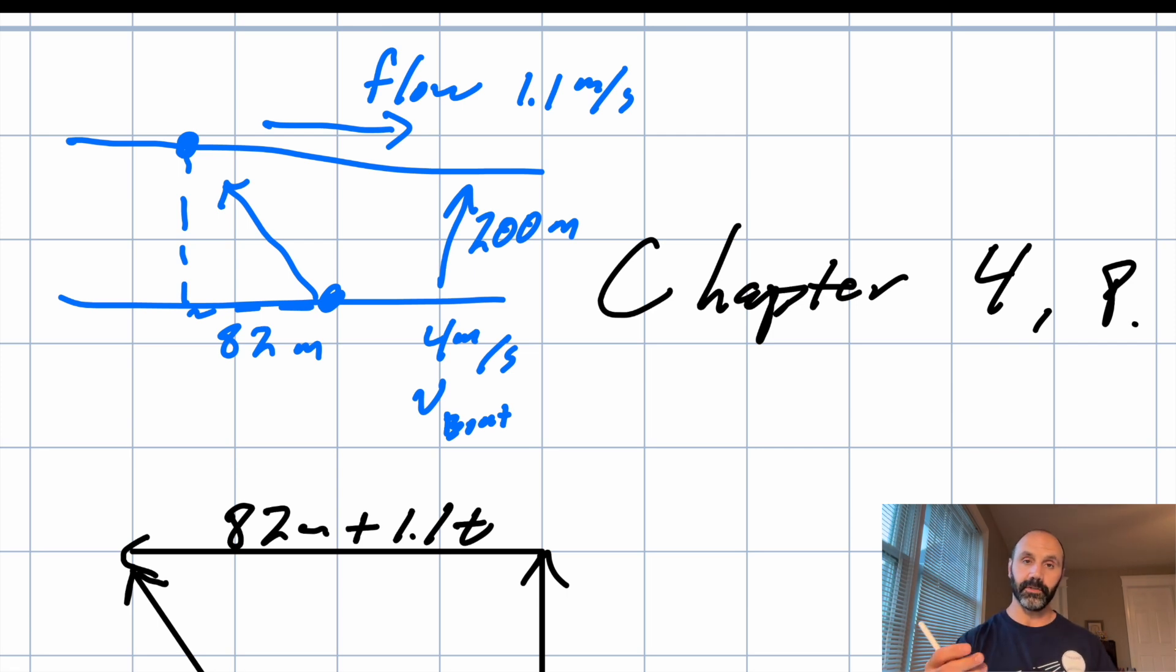Now, important to realize that's the velocity of the boat relative to the water. The water itself is moving. So what the boat's velocity will be relative to the shore is a different matter, right? That'll kind of depend on some other factors here.